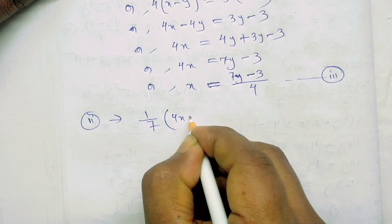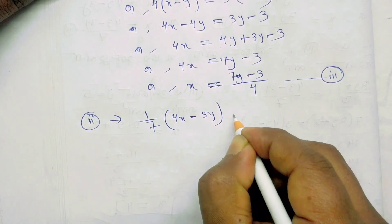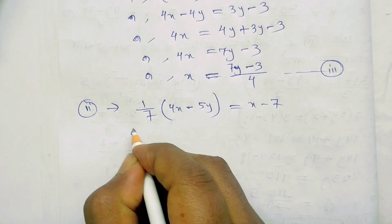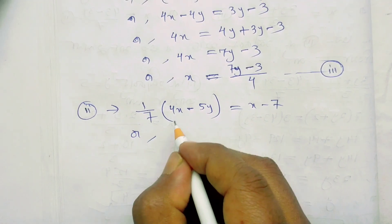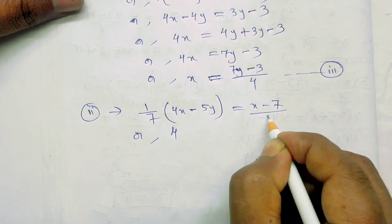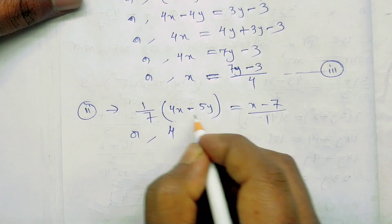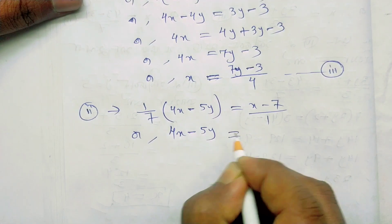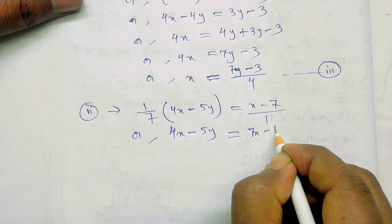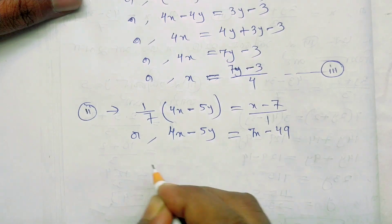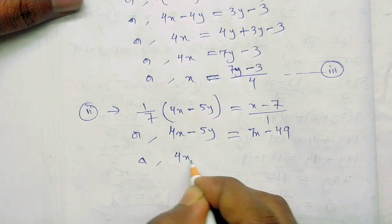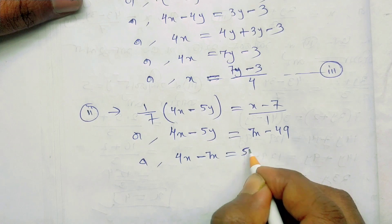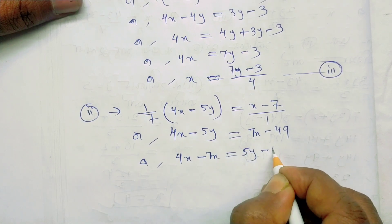1 by 7: 4x minus 5y equals x minus 7. So here we know this is equal to 1. So the respect for x minus 5y, and we have 7x minus 6. So 4x minus 7x and 5y plus 5y minus 1.